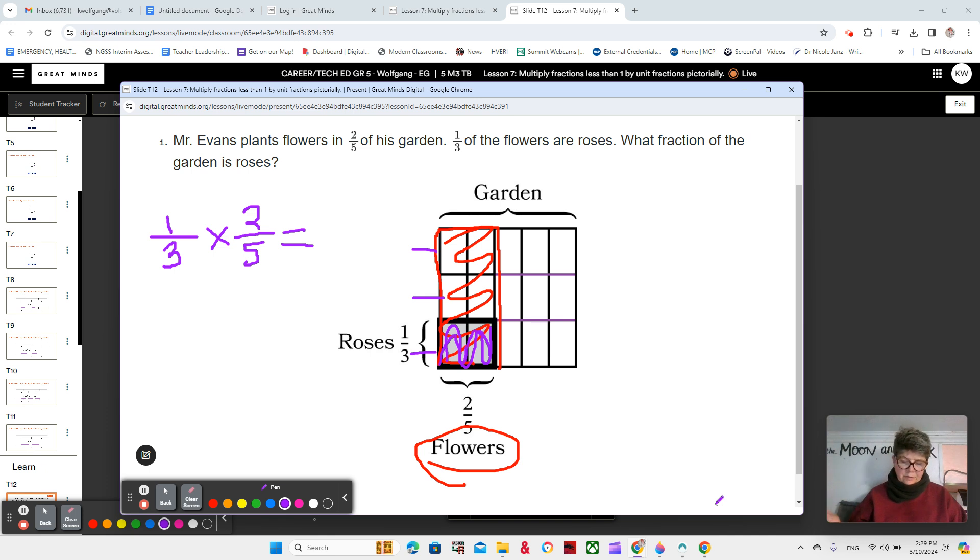How many equal sized parts are in the whole model? Let's see. We know we have five and three. So, all together we have 15 parts. And what fraction is shaded now? Two fifths. Right? So, we can say that two, sorry, two fifteenths, not fifths, two fifteenths of the garden is roses. And we can see it works with the multiplication sentence and as well with the model.